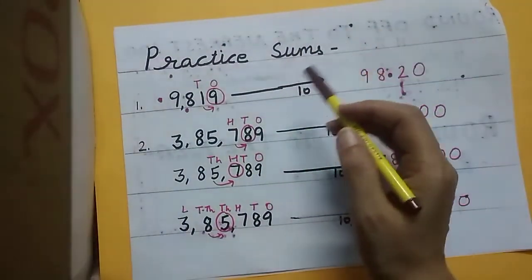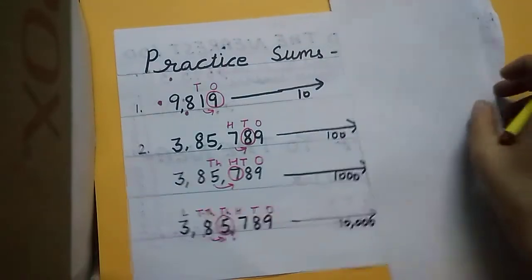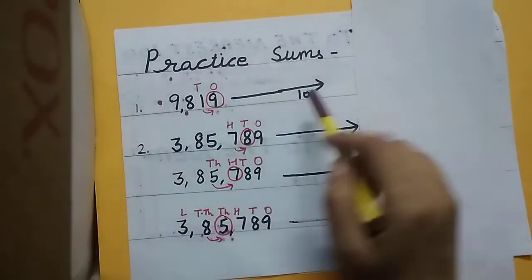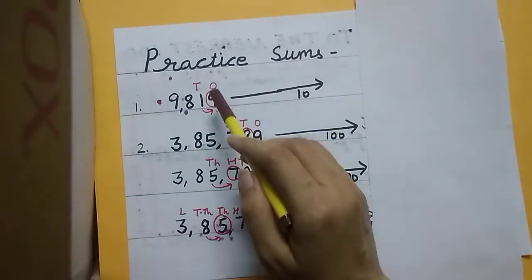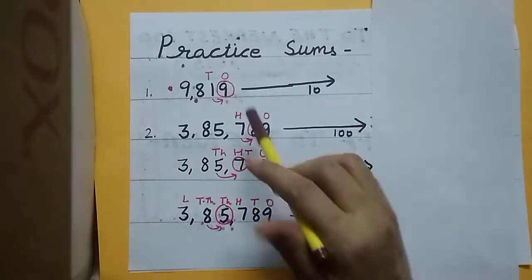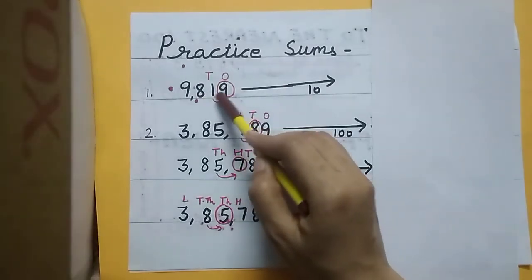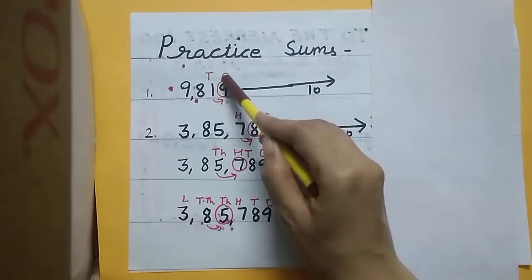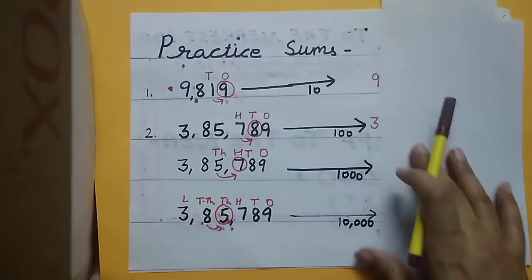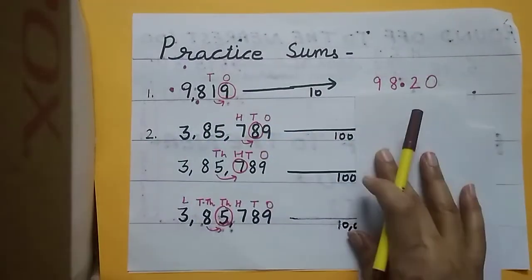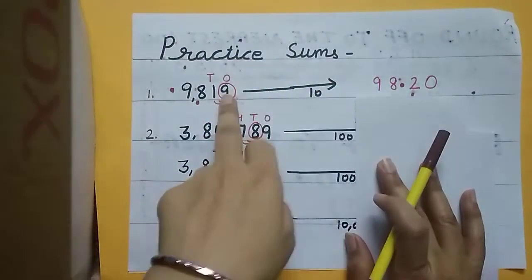Now let's move to practice sums. Here I have written: round off to the nearest ten, hundred, thousand, and ten thousand. Round off to the nearest ten — write the places: ones, tens. Just right of the tens place, the digit is nine. Nine is greater than five, so it will become zero and one will become two. Our answer will be nine thousand eight hundred twenty.